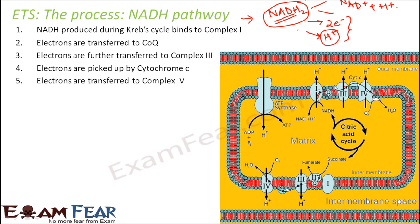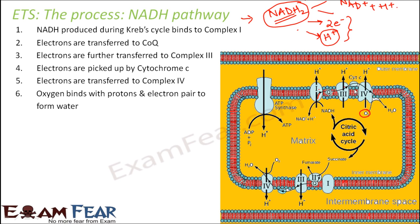Finally the electrons are transferred to complex 4. Oxygen is present here and is the final electron acceptor. None of the complexes were actually absorbing the electrons — they were just passing them along. Now oxygen will bind with the electron pair and with a proton present in the matrix to form water. That is how oxygen forms water, and those electrons are consumed.